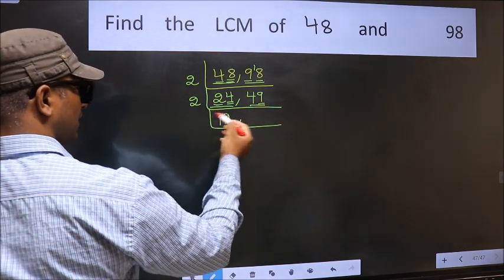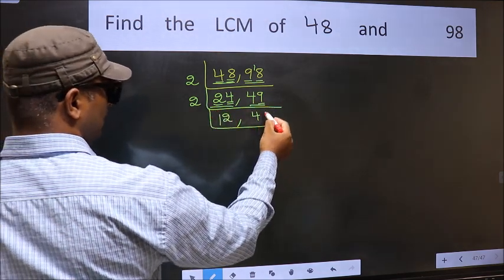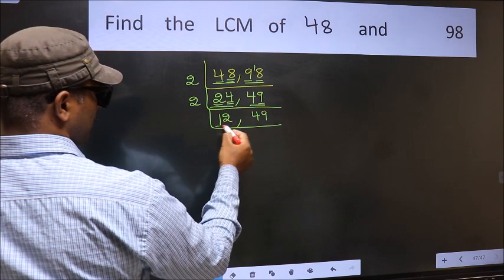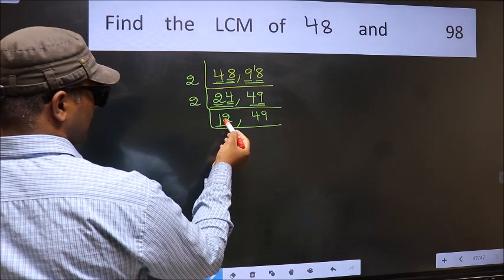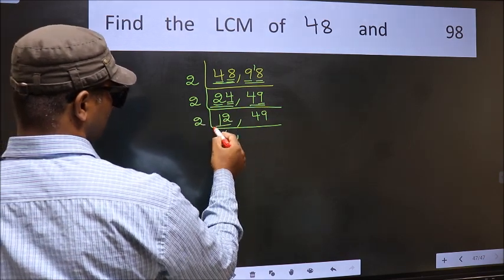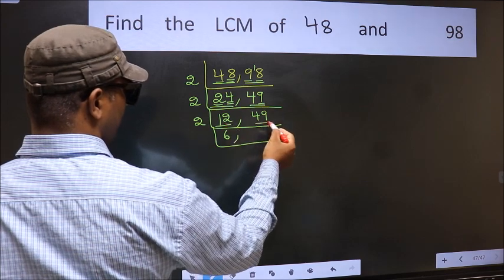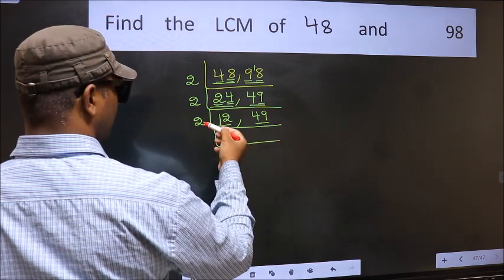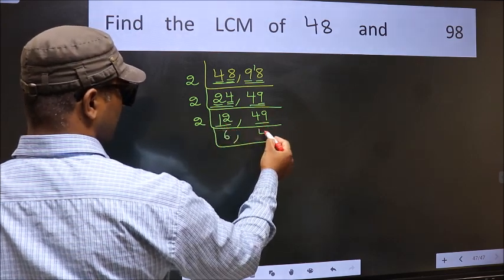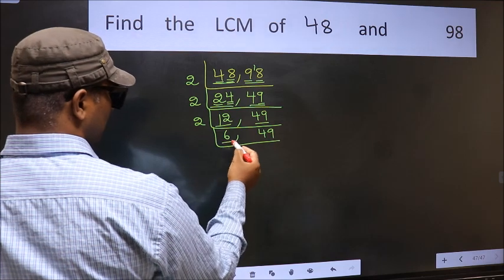Now we have 12. 12 is 2 times 6. The other number 49 is not divisible by 2, so we write it down as it is.